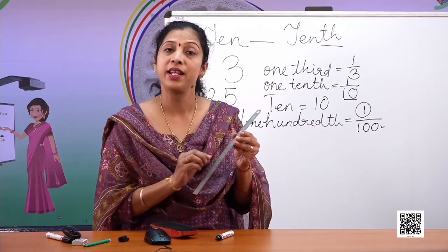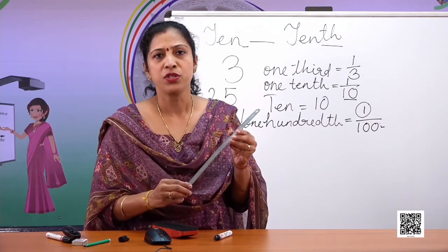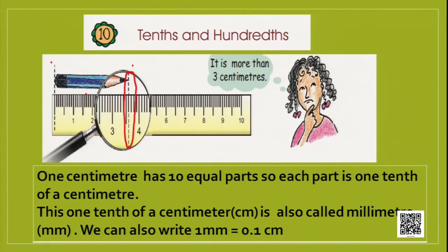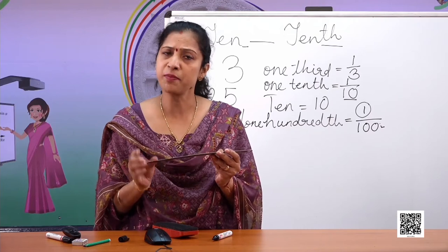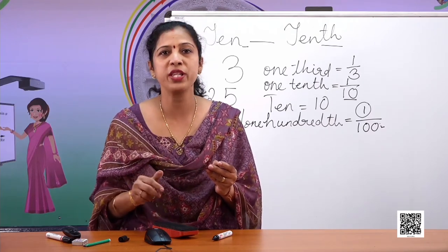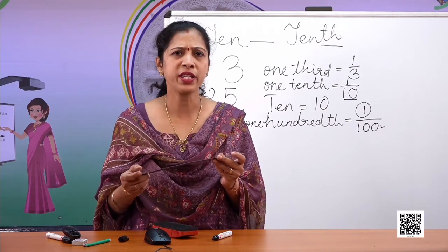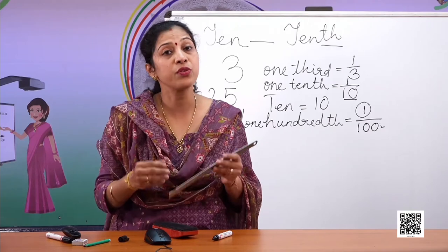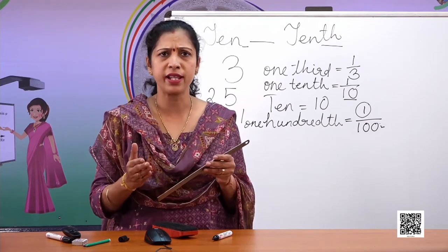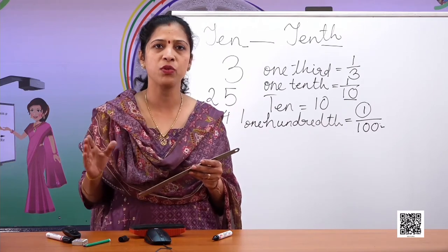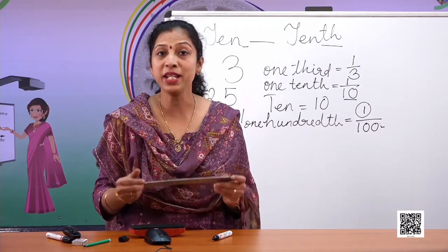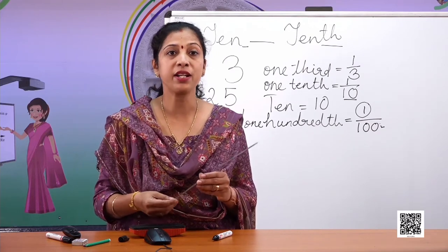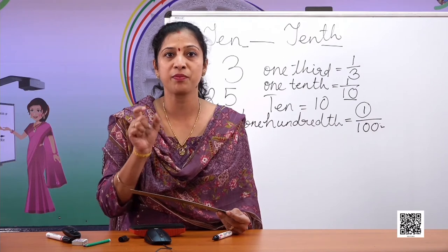Centimeter is the unit with which we measure the length of anything. Centimeter is a smaller unit; if something is very small we use millimeter. For larger distances, we use kilometer or meter — for example, my house is three kilometers from this place, my school is five kilometers from my house. So the larger distance is measured in kilometers.